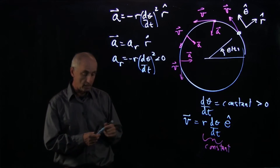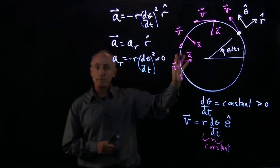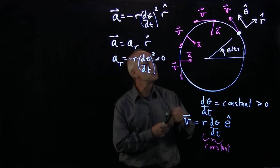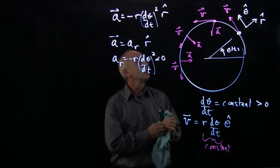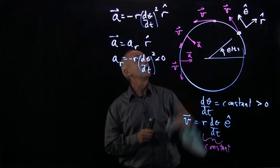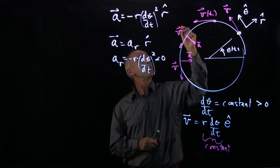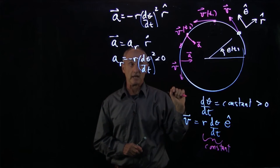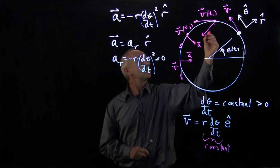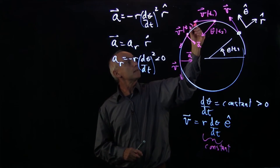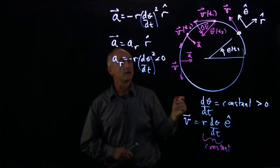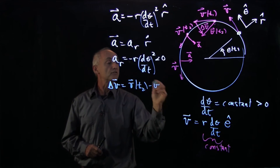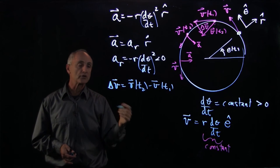How can we think about that? If we look at the velocity vector, what's happening is the velocity is not changing magnitude, but changing direction. If we compare two arbitrary points — say at time t1 and t2 — our velocity vectors are tangent and have the same length. If we move them tail to tail and take the difference Δv, where Δv = v(t2) − v(t1), we can get an understanding of why the acceleration is pointing inward.